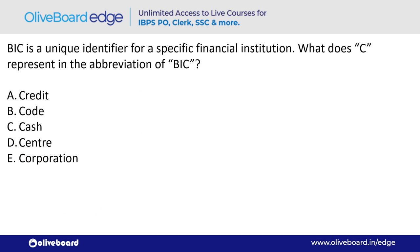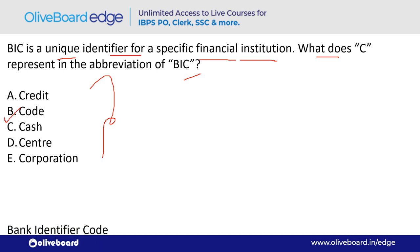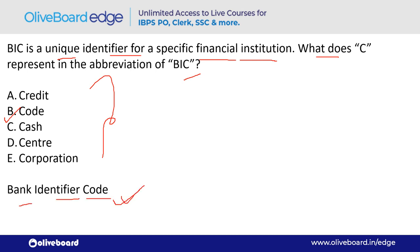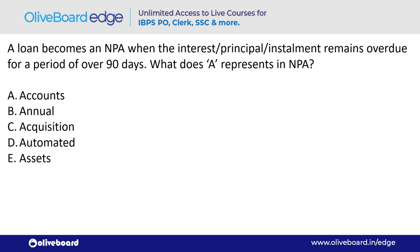BIC is a unique identifier for a specific financial institution. What does 'C' represent in BIC? C is Code — option B. BIC stands for Bank Identifier Code. Note that any letter — B, I, or C — can be asked, so remember the full form well.